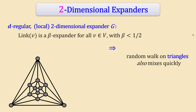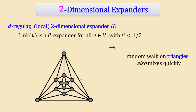One consequence of the two-dimensional expander condition is that the natural random walk on triangles also mixes quickly: you start at any triangle, walk to an adjacent triangle sharing an edge, and so on. Since this implies the global graph is a good expander, the random walk on vertices also mixes quickly. However, this implication is one-directional — mixing quickly on the triangle walk does not necessarily imply the two-dimensional expander property, which is stronger.